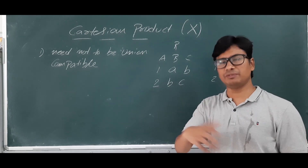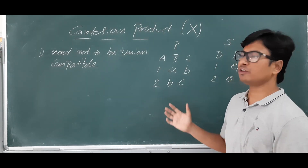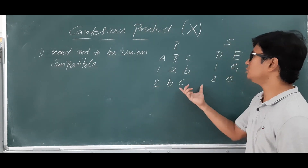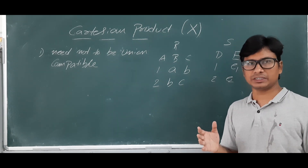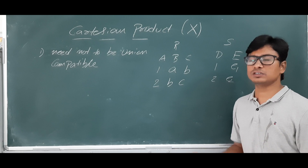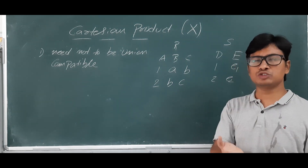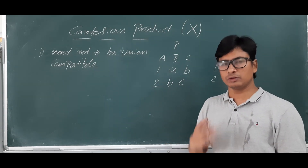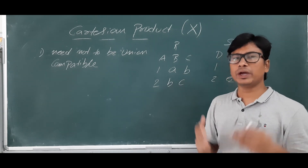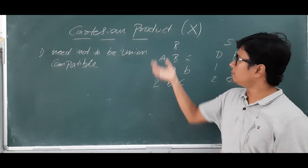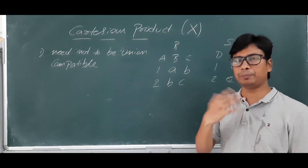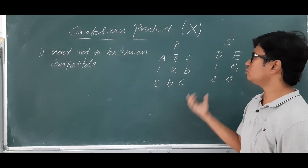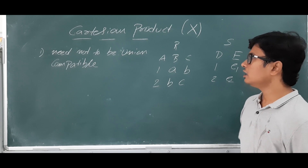If a chief warden or faculty member wants both marks and personal information together, they need to combine the two relations. In those cases, the join operator is used. The join operator is nothing but a combination of the cross product and the selection operator — cross product first, then selection gives a join.